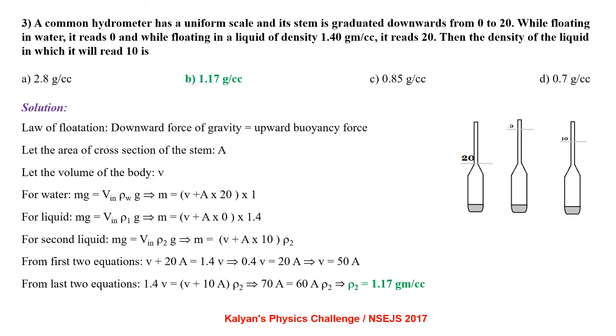A common hydrometer has a uniform scale and its stem is graduated downward from 0 to 20. While floating in water it reads 0 and while floating in a liquid of density 1.40 g per cc, it reads 20. Then the density of the liquid in which it will read 10 is.